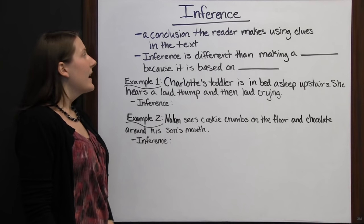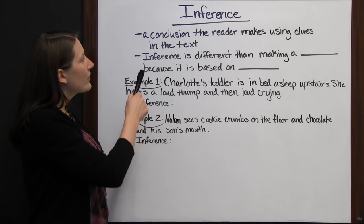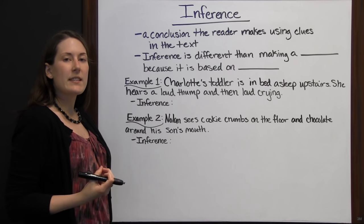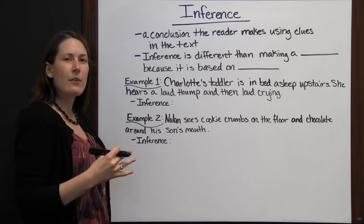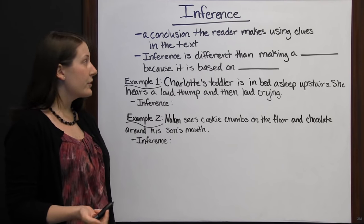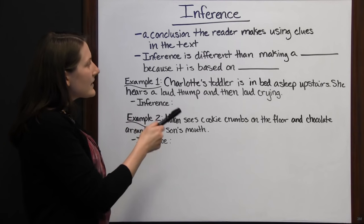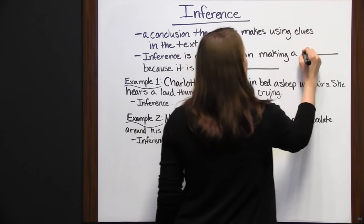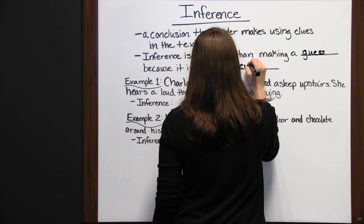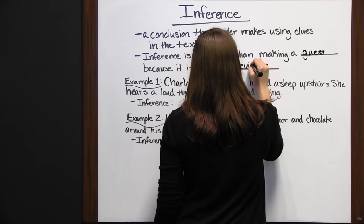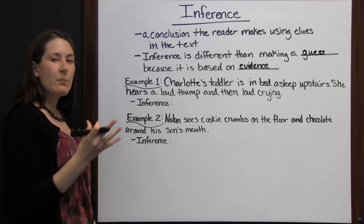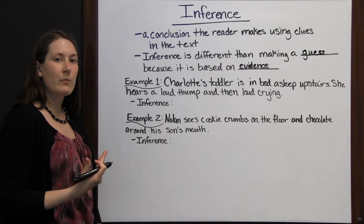Inferences are conclusions that a reader makes using clues in the text. An author may not explicitly say something, but they leave little hints behind and you have to connect the dots to form a conclusion. Inference is different from making a guess because it is based on evidence — you read, pick up on those clues or hints the author leaves behind, and put them all together to form your inference.